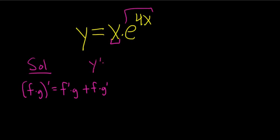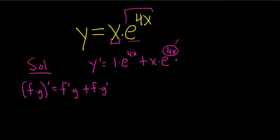So y prime — the derivative of the first piece is the derivative of x, so that's 1, times the second piece, so e to the 4x, plus the first piece, so x, times the derivative of the second piece. The derivative of e to the x is e to the x, so here it's e to the 4x, and then times the derivative of the inside function. That's the chain rule. The derivative of the inside is simply 4, because the derivative of 4x is 4.